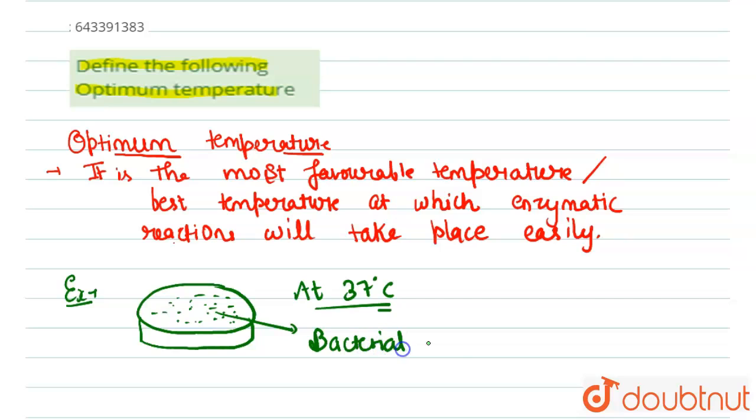So at this particular temperature this bacteria will grow. So this 37 degrees Celsius is the optimum temperature for the growth of the bacteria.